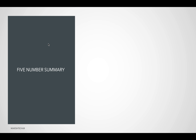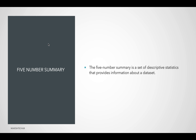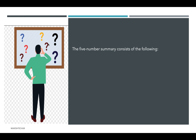First, we need to understand the five number summary. What is it, what is its use, and how do we find the five numbers? The five number summary is a set of descriptive statistics that provides information about a dataset. From a dataset, you select five key numbers: the minimum, maximum, median, first quartile, and third quartile — giving you a better descriptive picture of the data.